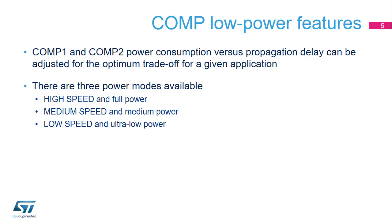The high-speed mode would be preferred for power conversion applications, for example a motor control design, while ultra-low-power mode would be the right choice for battery-powered applications where reaction times are not critical, for example in PIR sensor monitoring.